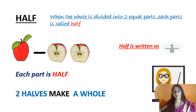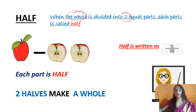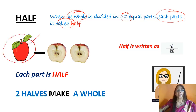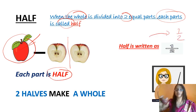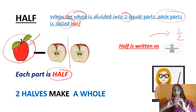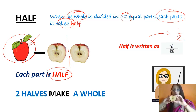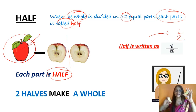Let's understand what half means. When the whole is divided into two equal parts, then each part is considered as half. As an example with an apple — this is a whole apple and we have divided it into two equal parts. Each part is called half, and half is written as one by two. This is two equal parts, and each part is known as half. This is a fraction!